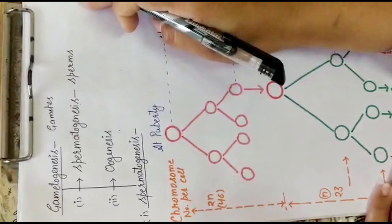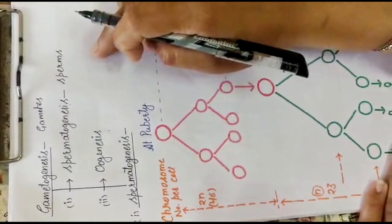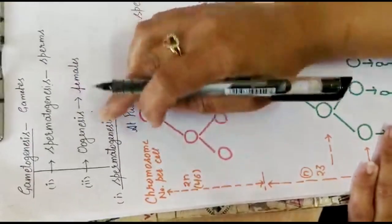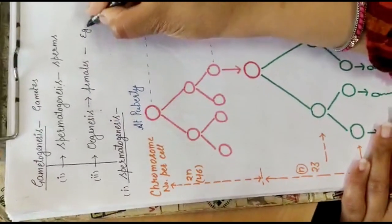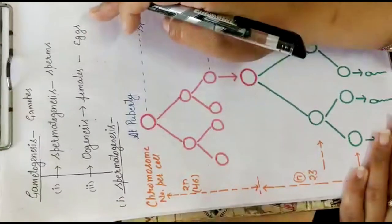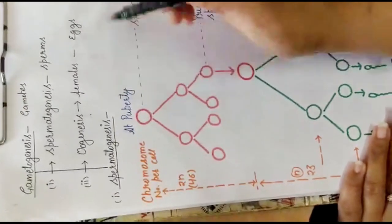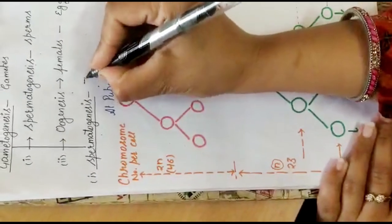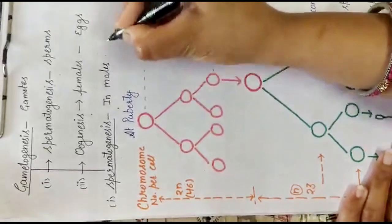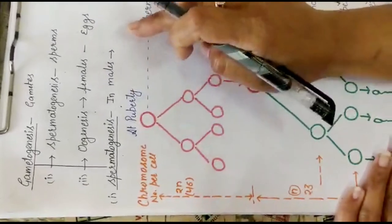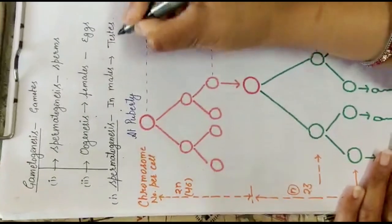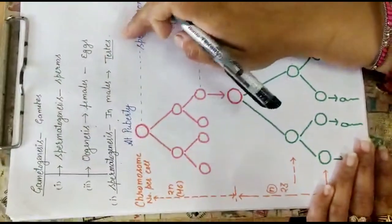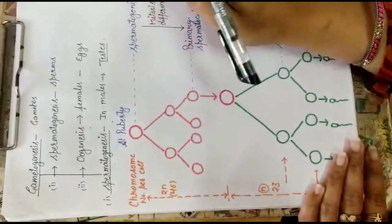Spermatogenesis is the process of formation of sperms from diploid spermatogonia in the testis. Similarly, oogenesis occurs in females and is the process of formation of eggs in the ovary from diploid oogonia. First we will discuss spermatogenesis in detail. The male primary sex organ is the testis, so this process obviously occurs there.